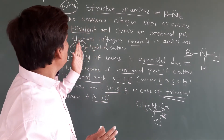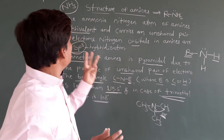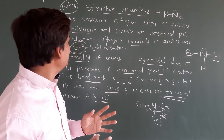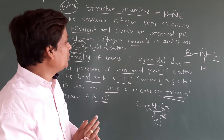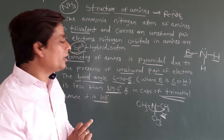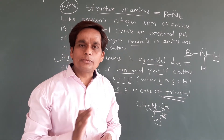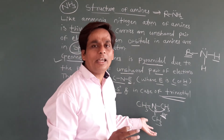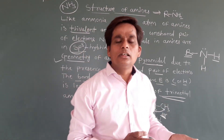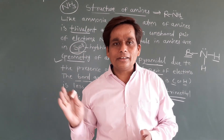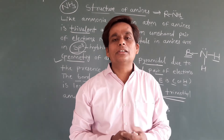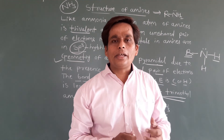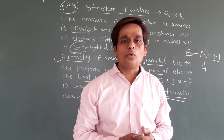To summarize the structure of amines: nitrogen is trivalent and pyramidal in shape, with sp3 hybridization, and the bond angle is 108° in trimethylamine. I hope everybody understands these basic concepts. In the next class we will discuss the nomenclature of amines. Thank you so much for watching this video.